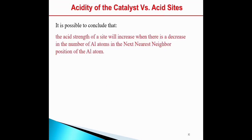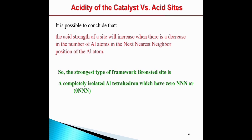It is possible to conclude that the acid strength of a site will increase when there is a decrease in the number of aluminum atoms in the next nearest neighbor (NNN) position of an aluminum atom. So, the strongest type of the framework Brønsted site is a completely isolated aluminum tetrahedron, which has zero NNN.